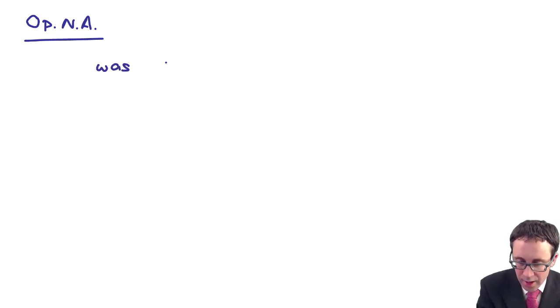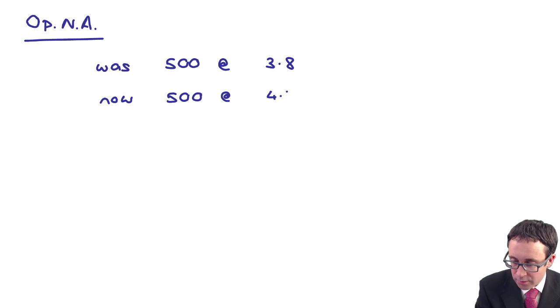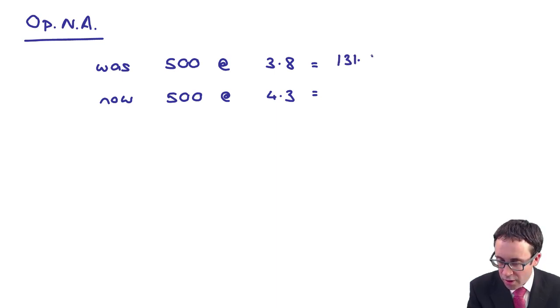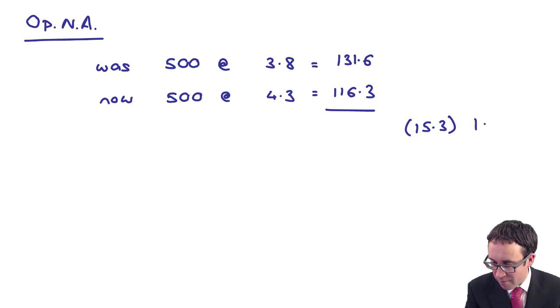So what we've got there is we would look at our opening net assets. So it was 500 at my opening rate of 3.8, whereby now it's 500 at the 4.3.